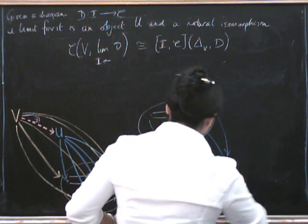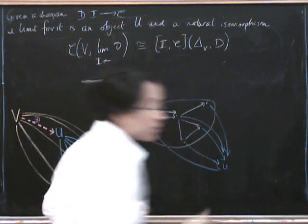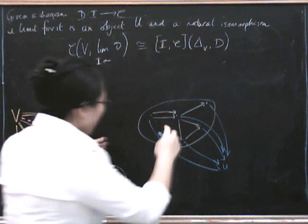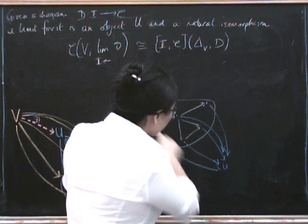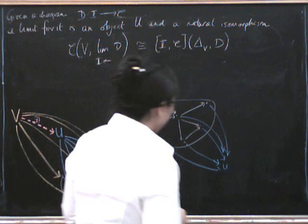Here's another object, and here's another object. And the commuting condition is, again, that every triangle involving two of these blue arrows and one of these white arrows has to commute.